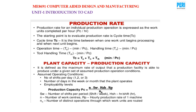Production rate for an individual production operation is expressed as work units completed per hour — PC per hour. TC is cycle time: the time between when one unit begins processing and the next unit begins, i.e., one complete operation of the particular component. Operation time is T0, handling time is Th, and tool handling time is Tth. So Tc (cycle time) equals T0 (operation time) plus handling time plus tool handling time.